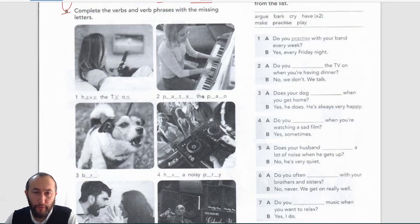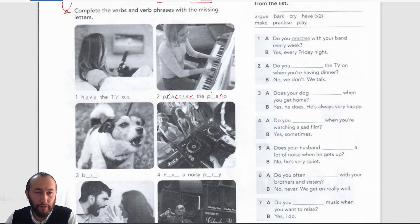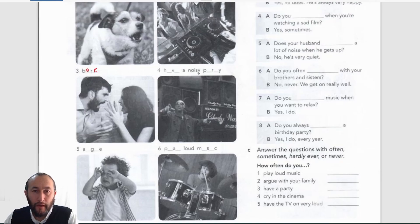Number two is 'practice the piano' — p-r-a-c-t-i-s-e — practice the piano, p-i-a-n-o. Number three: the dog is barking in the picture, so that would be 'bark' — b-a-r-k.